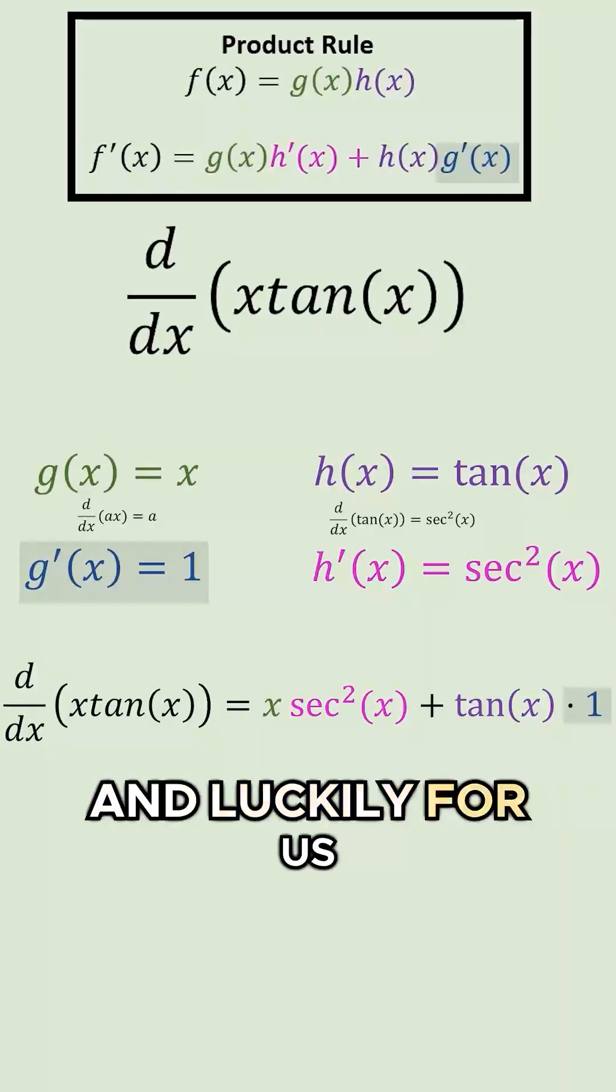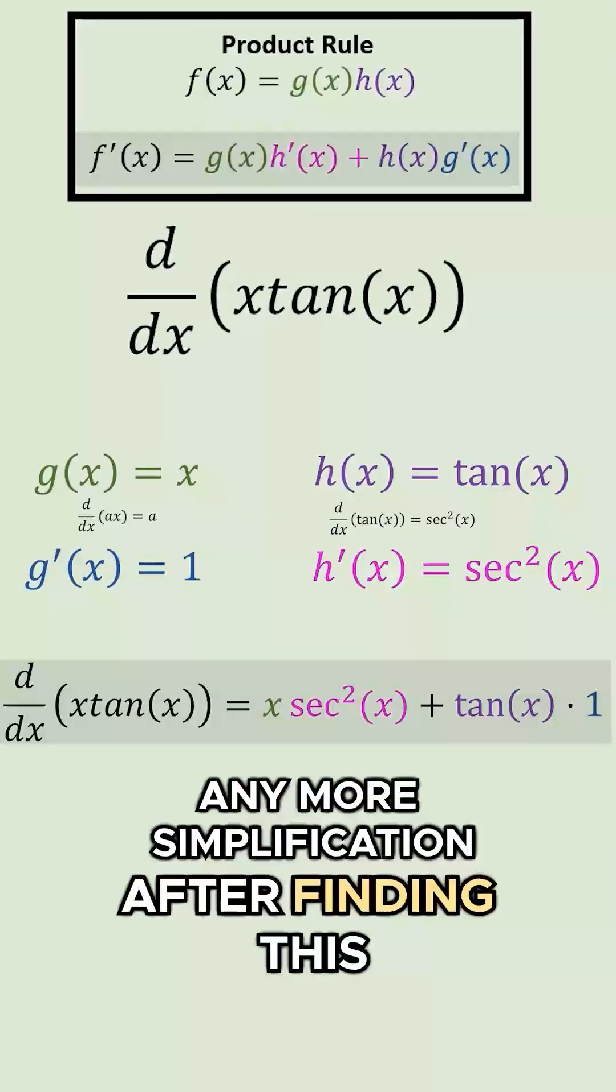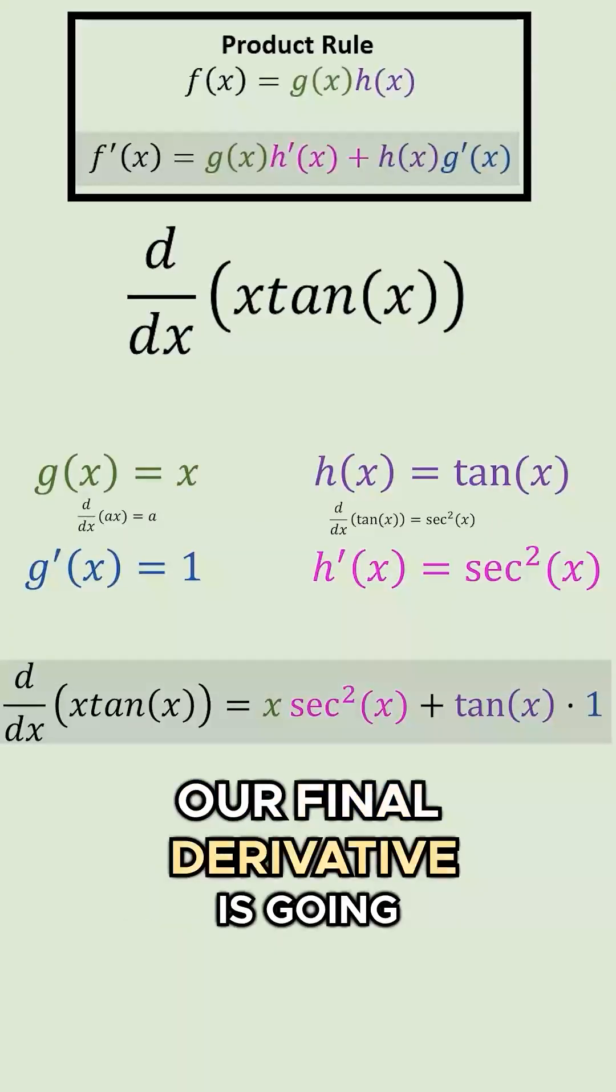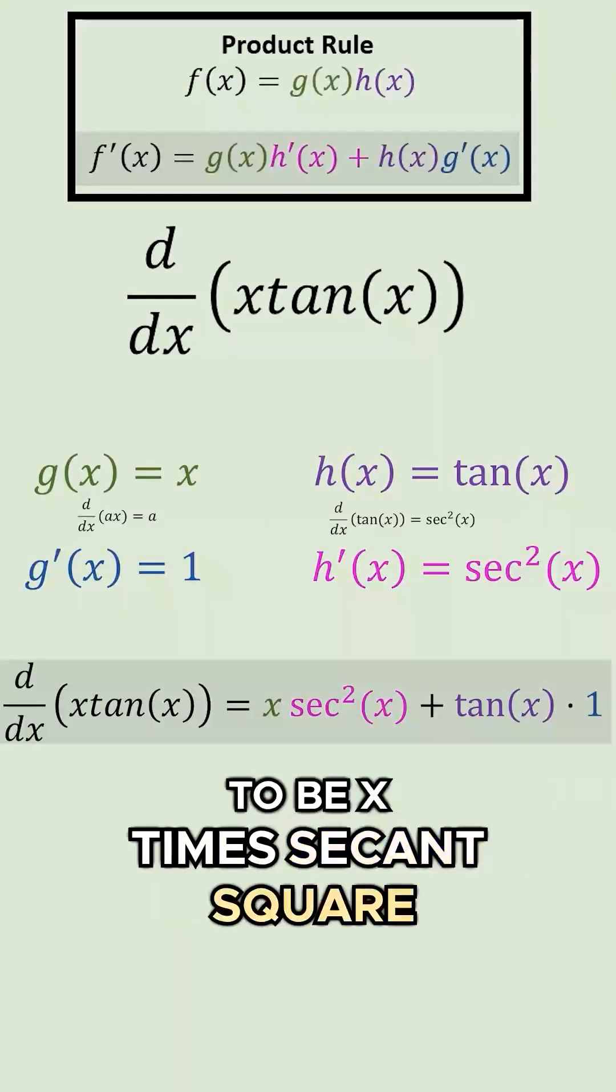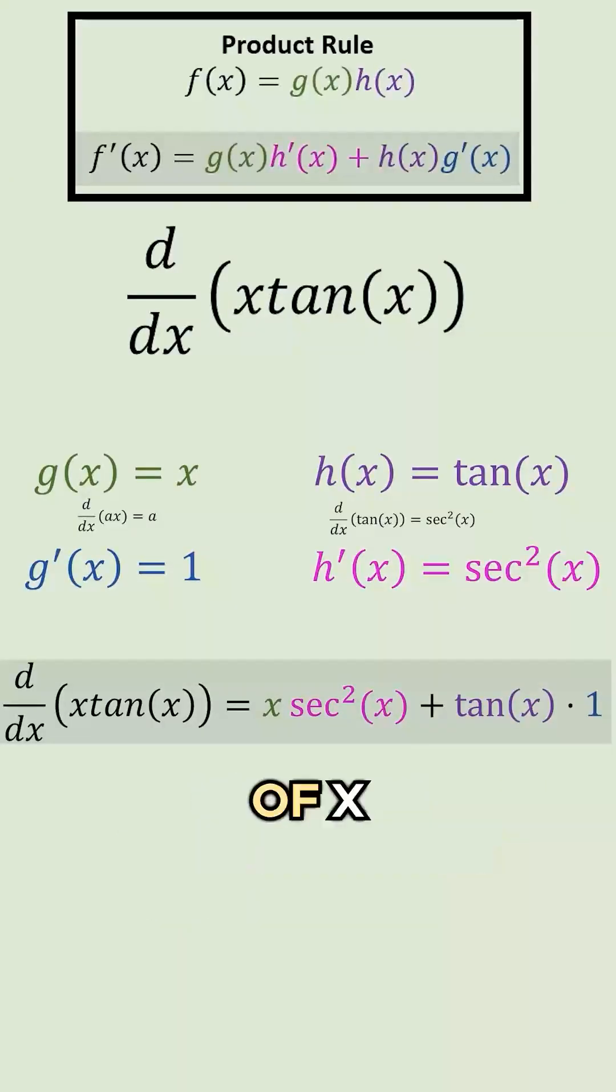And luckily, for us, we don't have to do any more simplification after finding this derivative. Our final derivative is going to be x times secant squared of x, plus tangent of x.